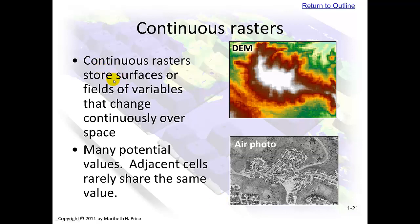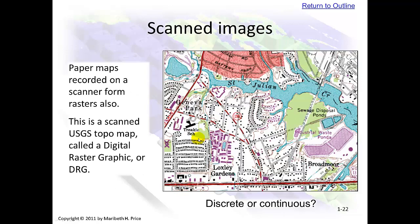Continuous rasters store surfaces of field variables that change continuously over space. They have many potential values. Adjacent cells rarely share the same value, noticeable by the shading from white to gray to tan to red to yellow to green. Air photos are also rasters — similar to pictures where you have pixels as the cells. Scanned images can also be used in GIS; this is a scanned USGS topo map called a digital raster graphic, or DRG.